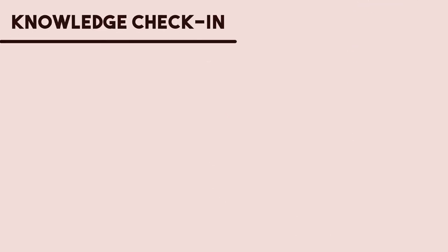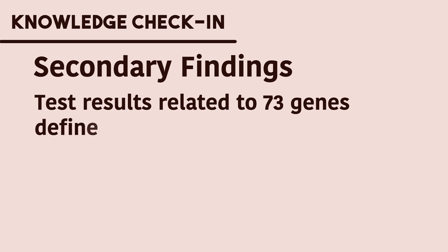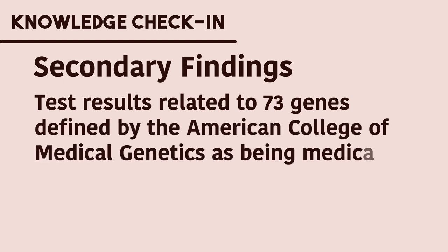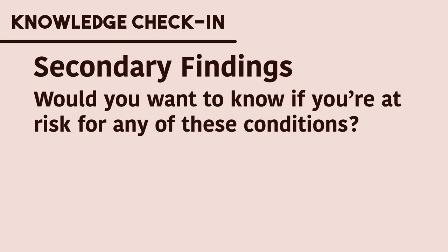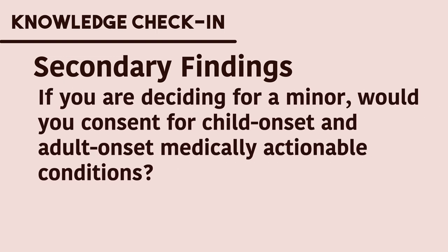Time for a knowledge check-in. To summarize, secondary findings are results related to 73 genes defined by the American College of Medical Genetics as being medically actionable. Think about whether you would want to know if you are at risk for any of these conditions. If you are deciding for a minor, would you consent for childhood onset and adult onset medically actionable conditions?